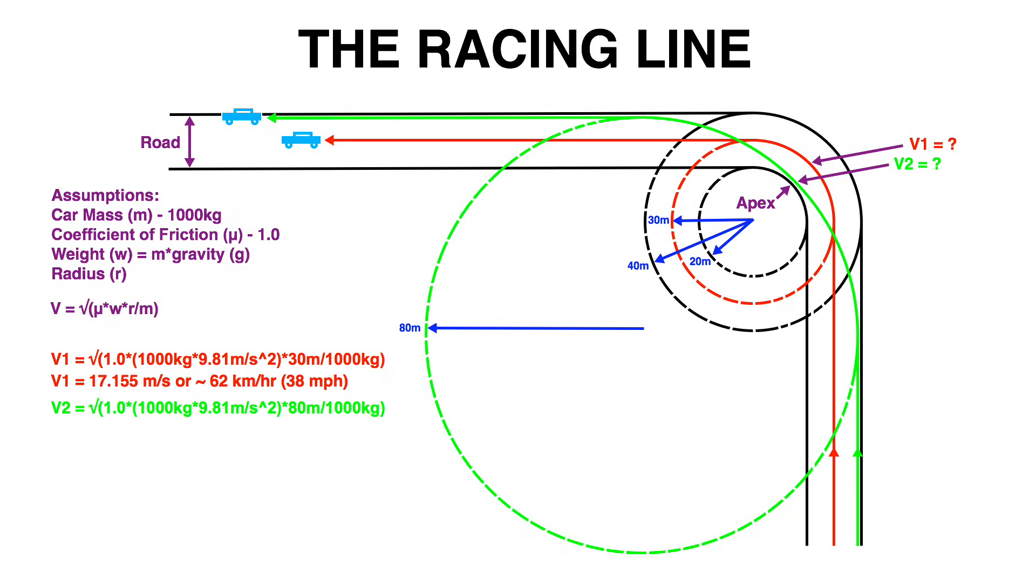Now if you were to take the racing line using the same equation but changing the radius from 30 meters to 80 meters you'll find the maximum velocity is equal to 28 meters per second equivalent to about a hundred kilometers per hour or 62 miles per hour.